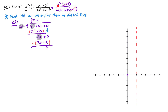Since the degree of the numerator is 1 higher than the degree of the denominator, our oblique asymptote is y equals the quotient from long division — so y equals 1 half x plus 1. Let's plot this as a dotted line. It's a line with y-intercept 1 and slope 1 half. Starting at the point 0 comma 1, we go up one unit and right two units to reach 2 comma 2. Connecting these gives us our oblique asymptote as a dotted line.